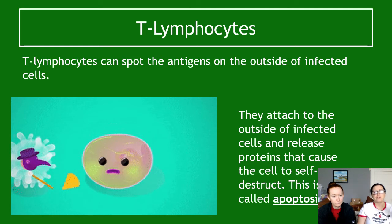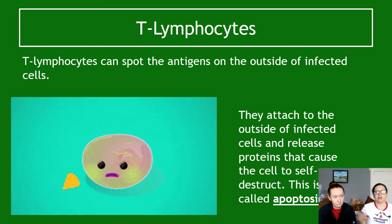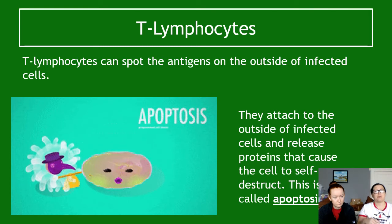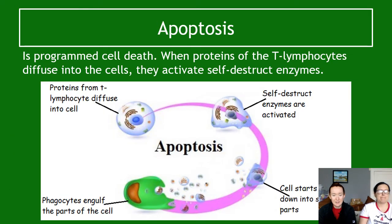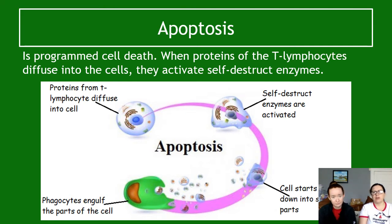This is good because we don't want an infected cell to get more and more infected and then spread the infection — like in zombie films where someone shoots a bitten person before they go full zombie. Apoptosis is programmed cell death. The proteins from the T lymphocyte diffuse into the cell, activating self-destruct enzymes that tell the cell to kill itself. The cell breaks down into small isolated parts, and phagocytes scoop up the pieces, preventing infection from spreading to neighboring cells.